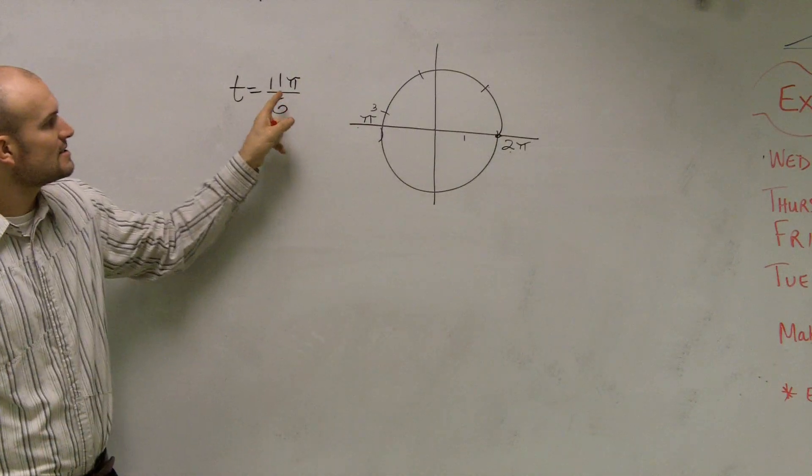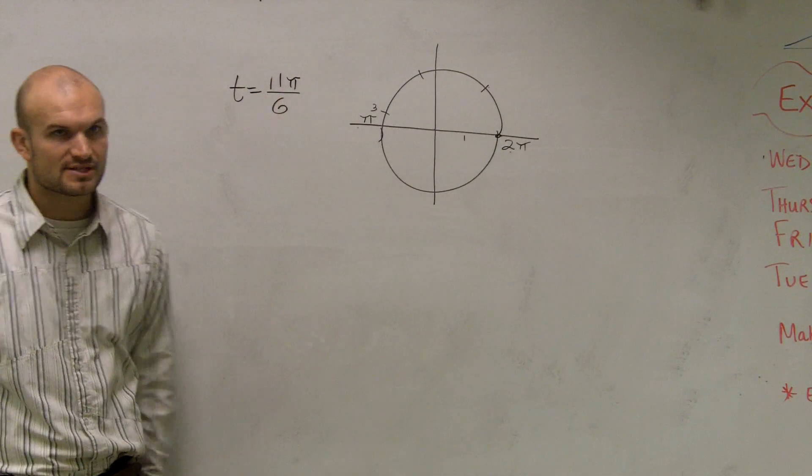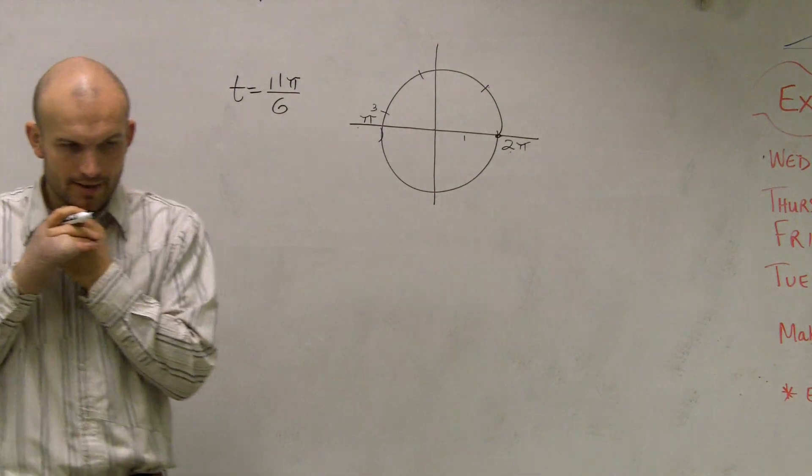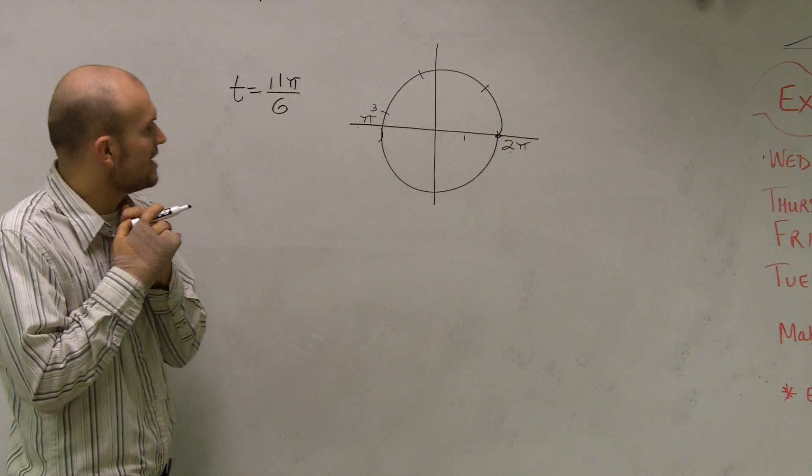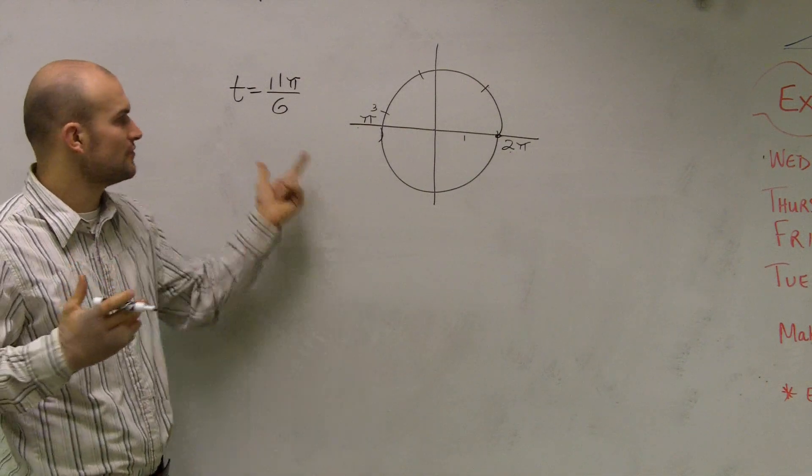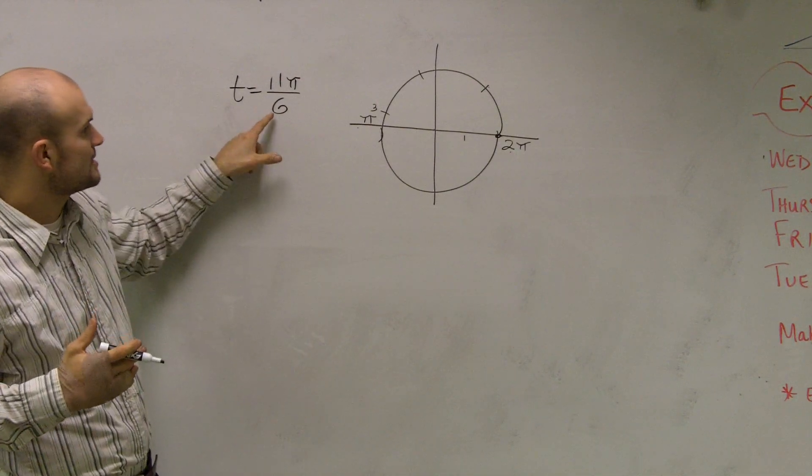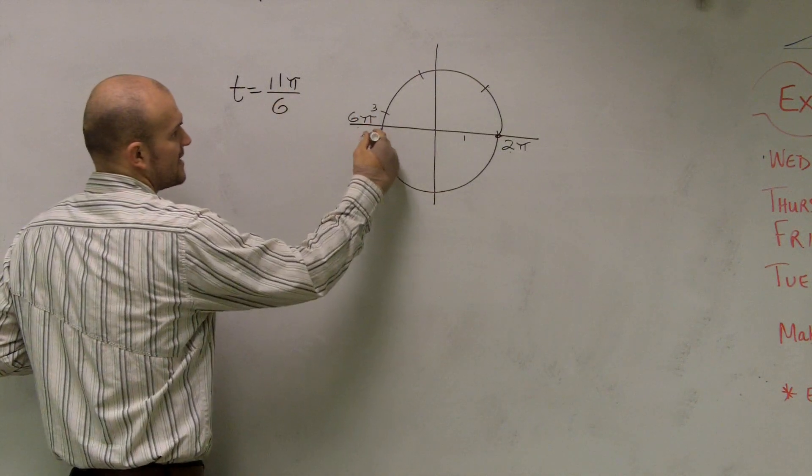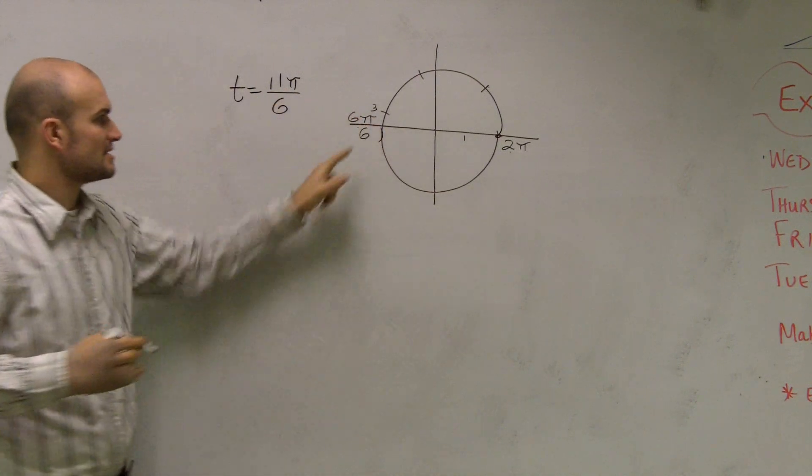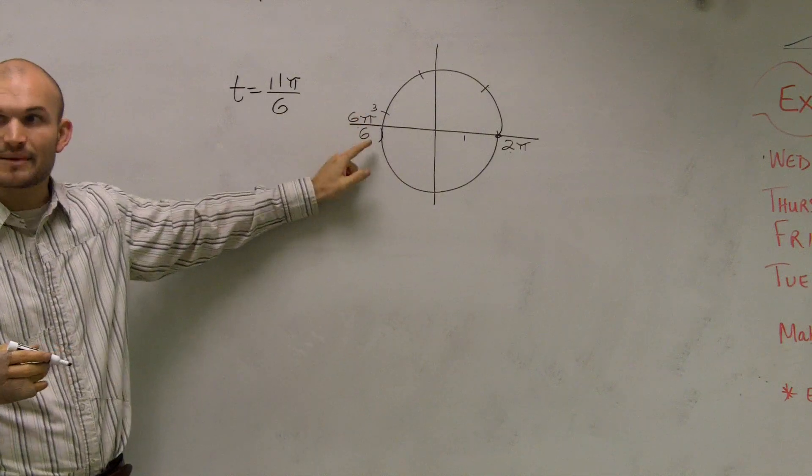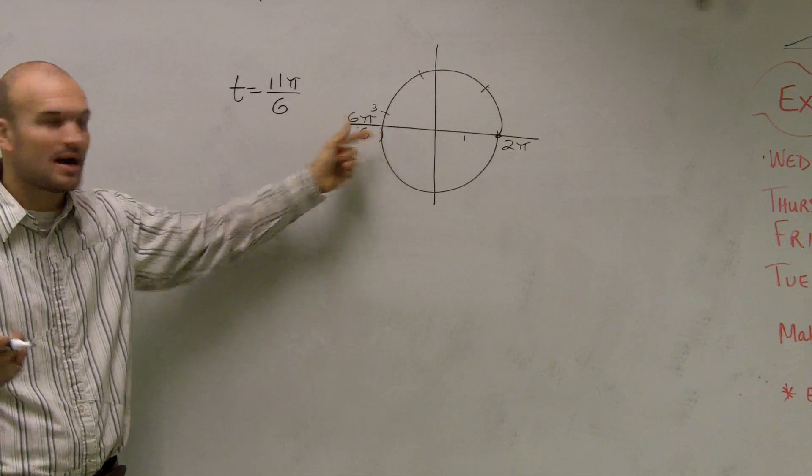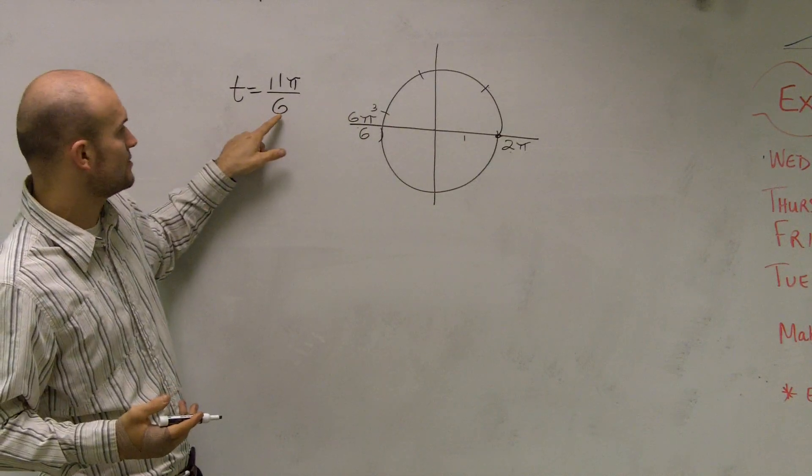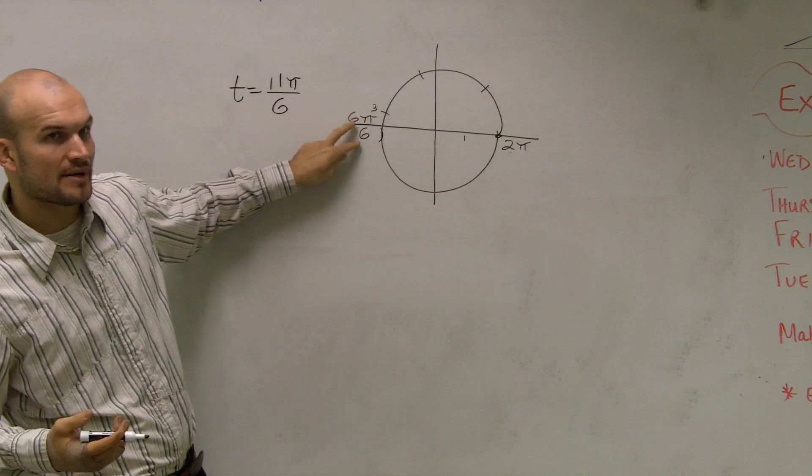So this one says they want to determine 11π over 6. What I like to do for these types of problems is remember that 6π over 6 is the same thing as π. So I like to always take what my denominator is and rewrite π with that denominator.